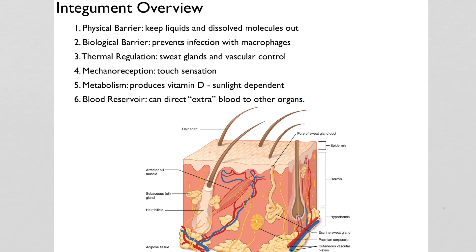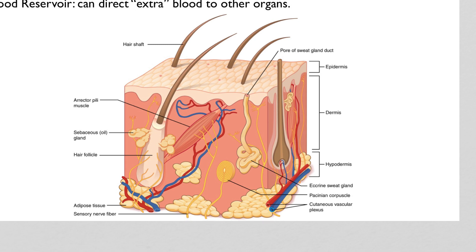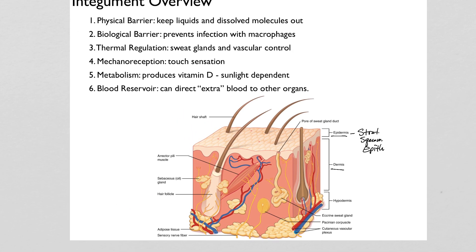This video covers an overview of the integumentary system, which is really just a fancy word for skin. To start with a quick recap of anatomy: your skin is split into two different parts that are legitimately skin — the epidermis and the dermis. The epidermis is actually an epithelial tissue, specifically a stratified squamous epithelial tissue, and it is your barrier between you and the outside world with a surprisingly important set of functions.